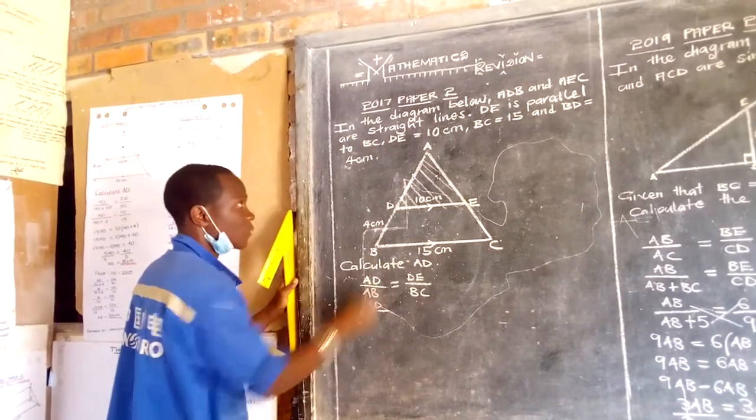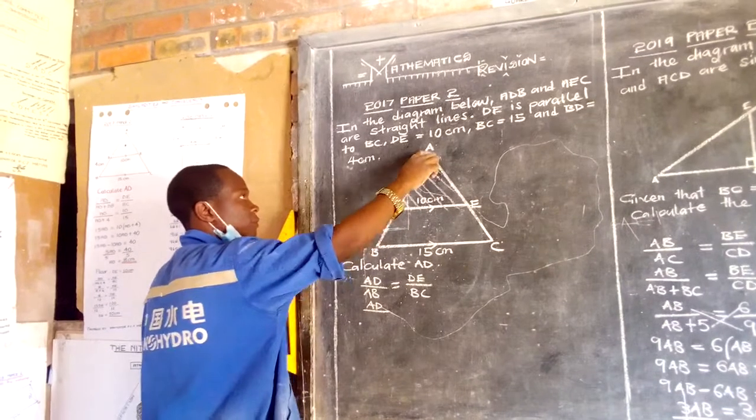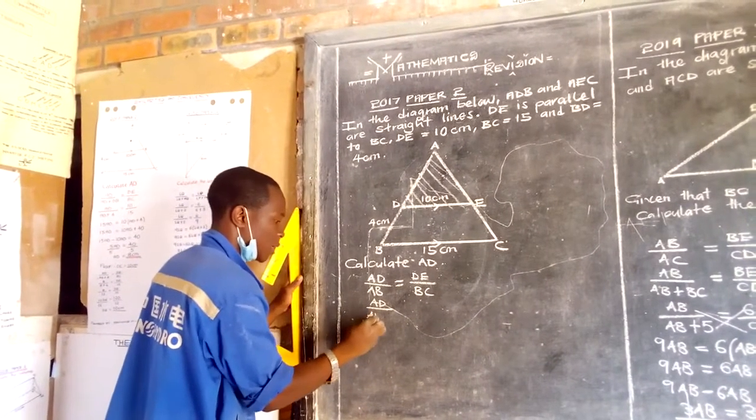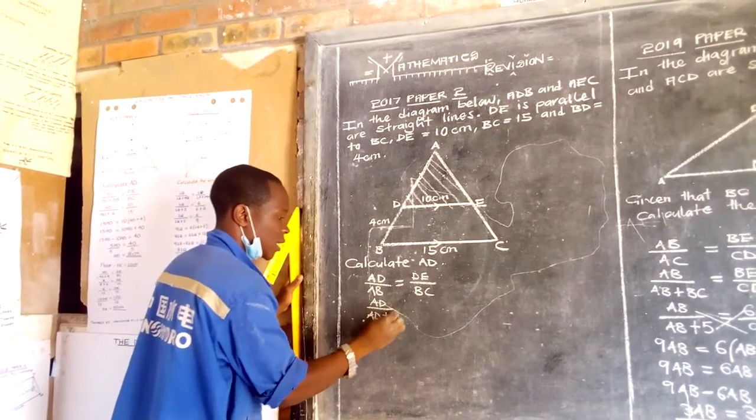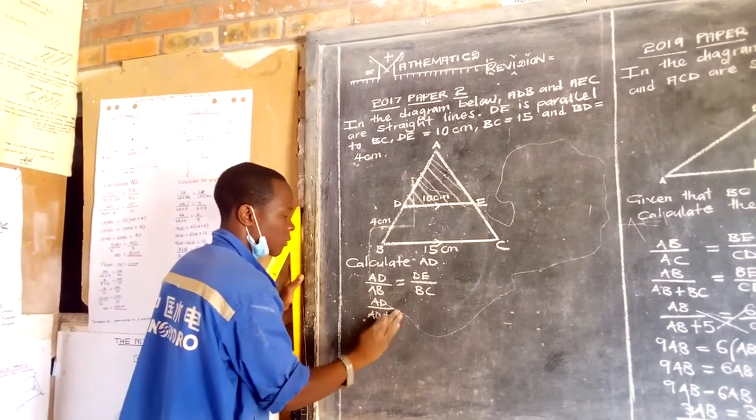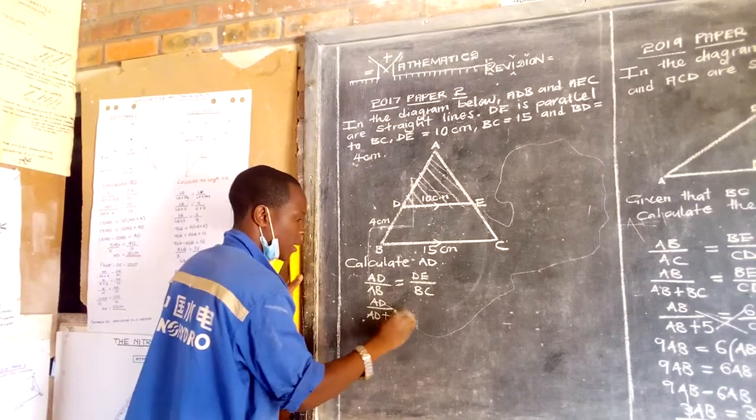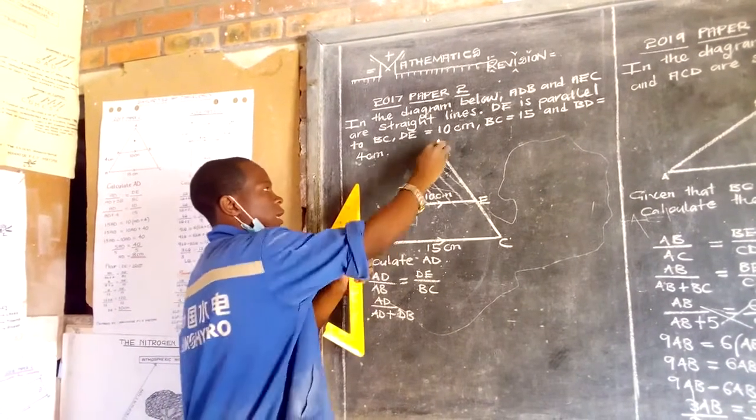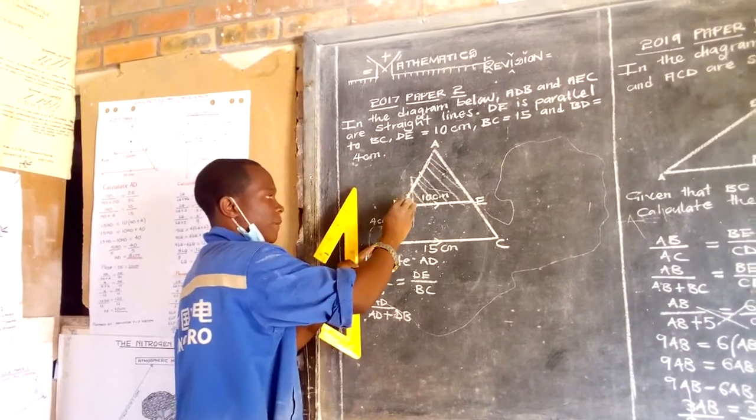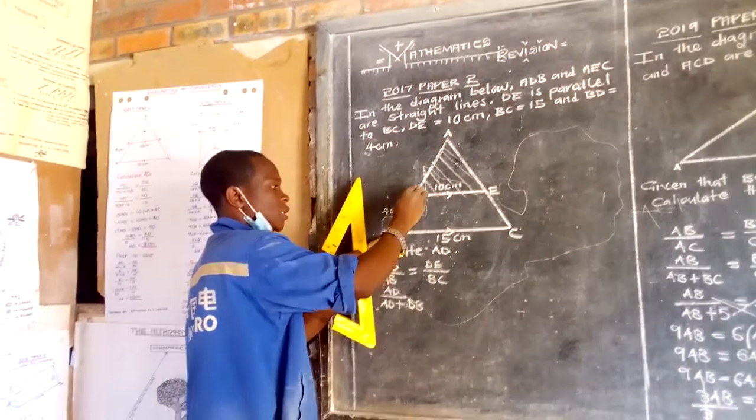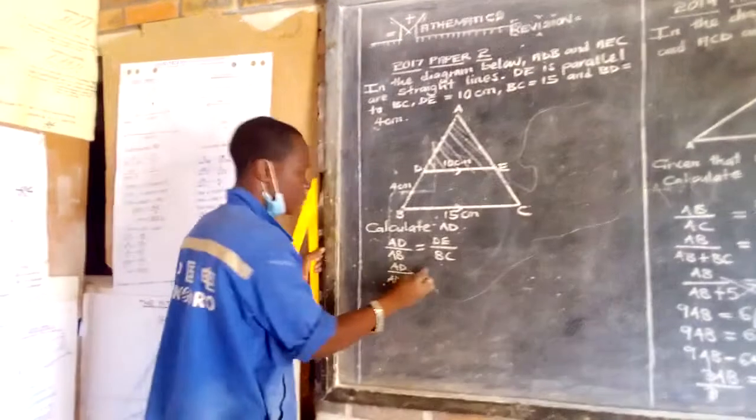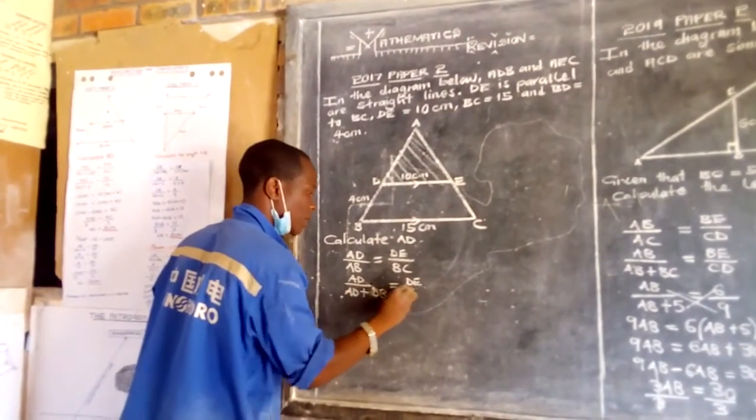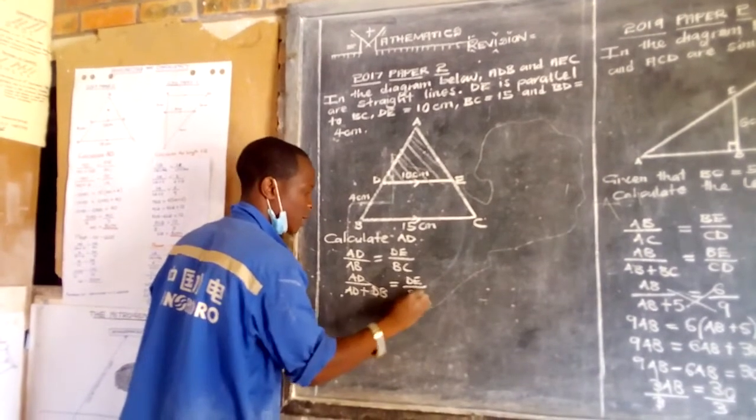For us to have AB, we need to add AD plus DB. So I say for us to have AB, we need to add AD plus DB. It is equal to, you maintain DE over BC.